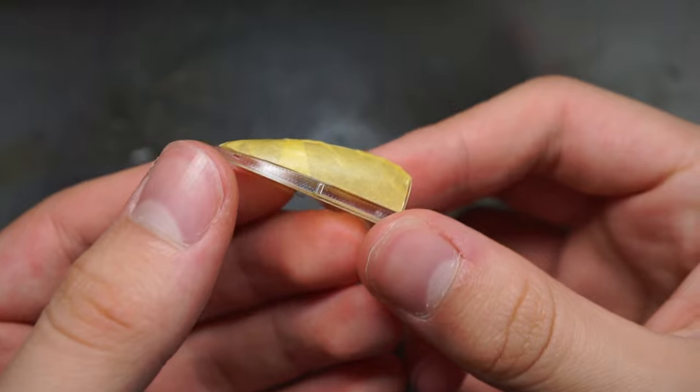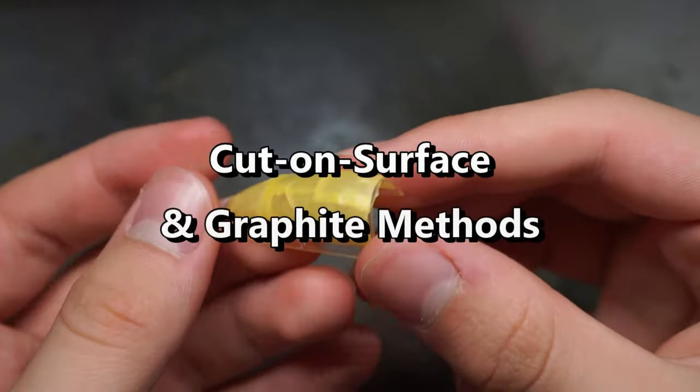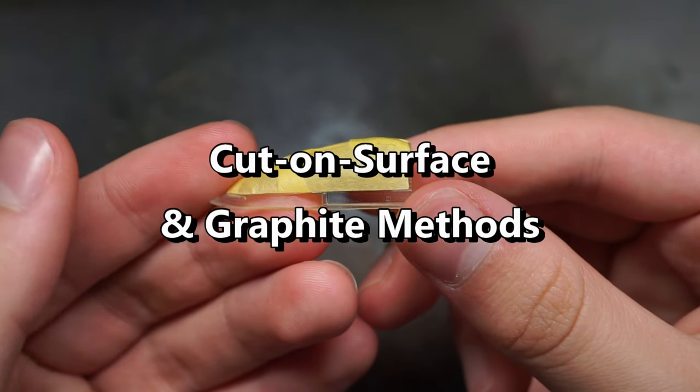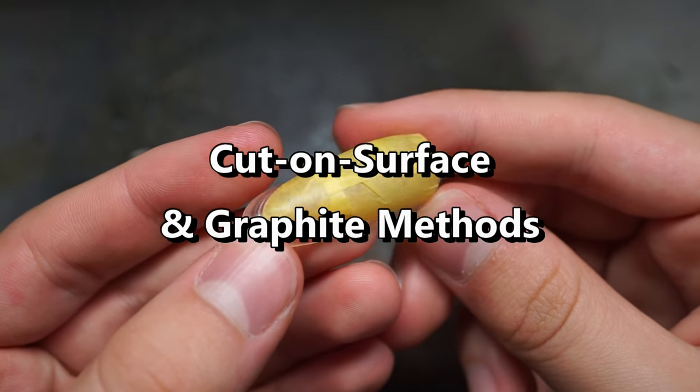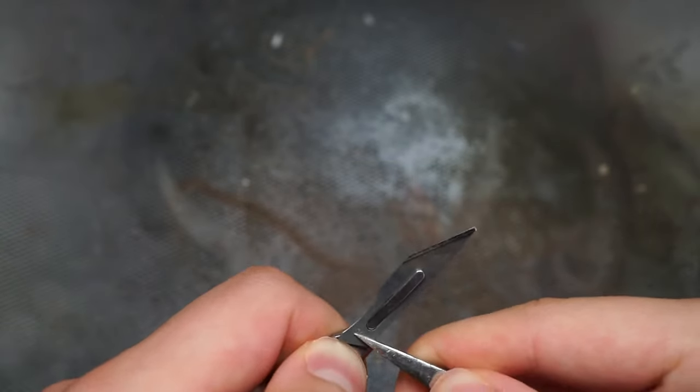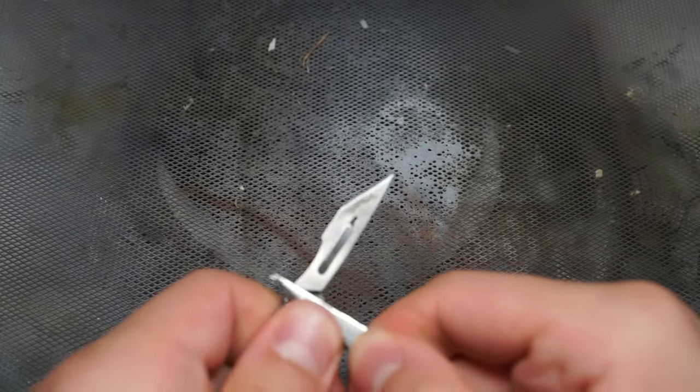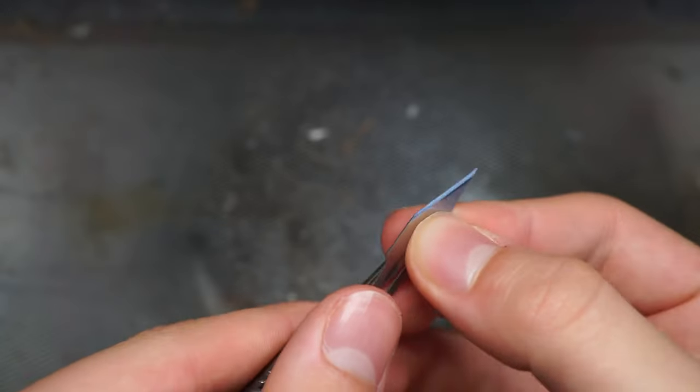The first method I'll be showing you today is sort of more like two morphed into one. I call it the cut on surface and graphite methods. Here's how they work in respective order. It's important that before you do any masking or cutting you load on a new scalpel blade fresh from the packet. This will allow you to minimize any possible damage to the clear parts.